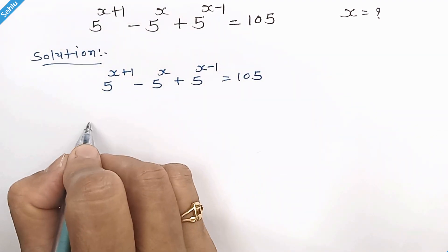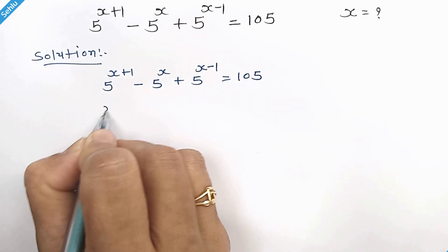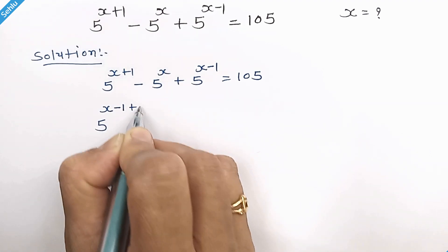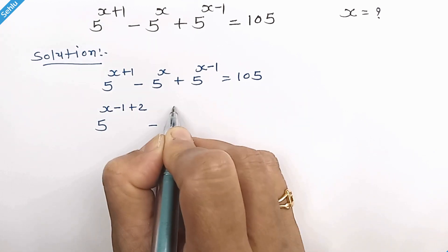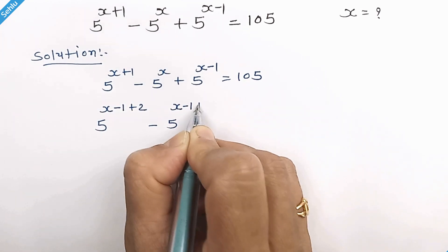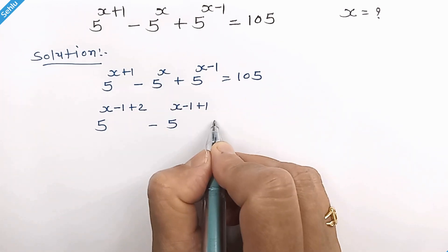In the first step we can write x minus 1 plus 2 in place of x plus 1, and x minus 1 plus 1 in place of x.